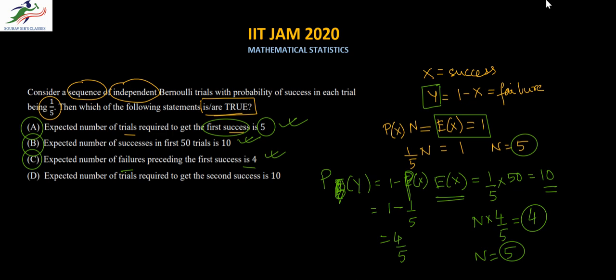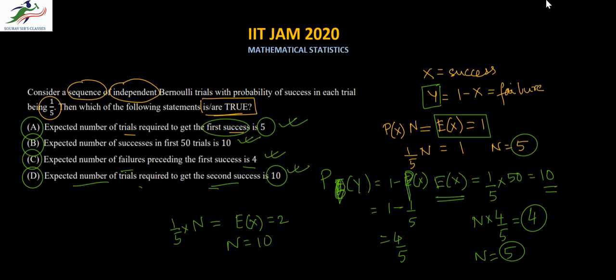Option D: expected number of trials required to get the second success. Setting E[X] = 2, we have (1/5) × n = 2, so n = 10. The expected number of trials required to get the second success is 10. This is also correct. So all four options are correct in this case. Thank you.